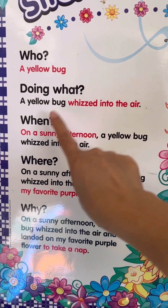You need to answer who, what, when, where, and why. For example: why did the yellow bug land on your favorite purple flower? On a sunny afternoon, a yellow bug whizzed into the air and landed on my favorite purple flower to take a nap.